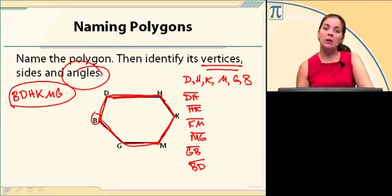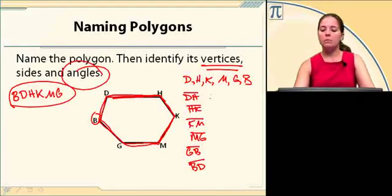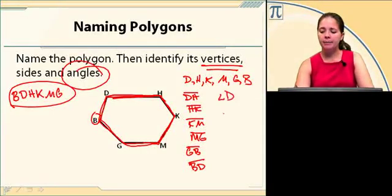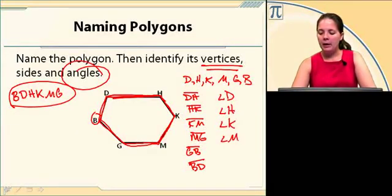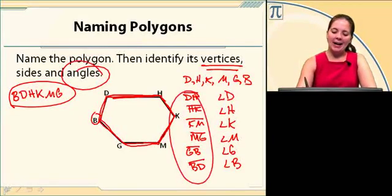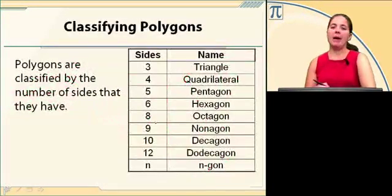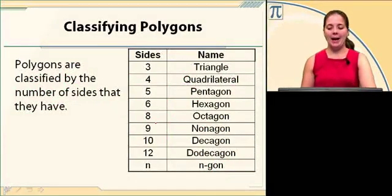So I've got six letters, six vertices, six segments, and I'm going to have six angles. This is going to be a hexagon because there are six of those. The angles are angle D, angle H, angle K, angle M, angle G, and angle B. Since I have six sides, I said this was a hexagon. That's how we classify polygons, by the number of sides they have.